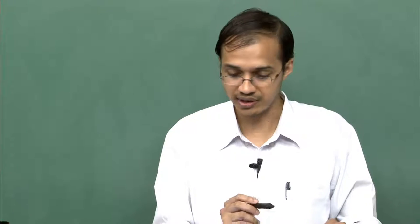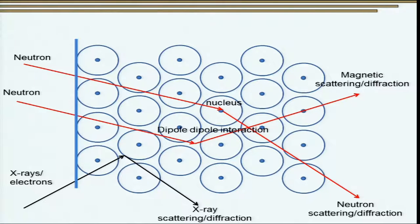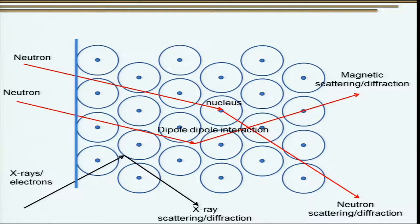Neutrons also have a tendency to interact via magnetic dipole. Since neutrons have a particular spin and a magnetic dipole moment associated with them, they can interact with free electrons that also have a dipole moment. This dipole-dipole interaction can give us information about magnetic scattering or diffraction. Neutron diffraction is probably one of the most sophisticated techniques that can give information about the magnetic structure of a material.